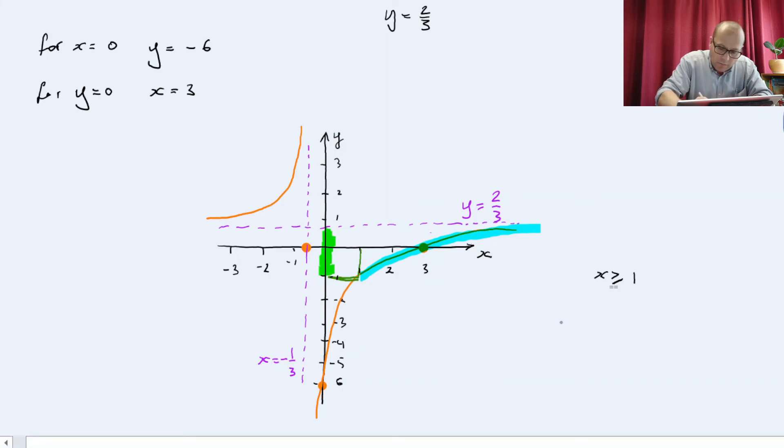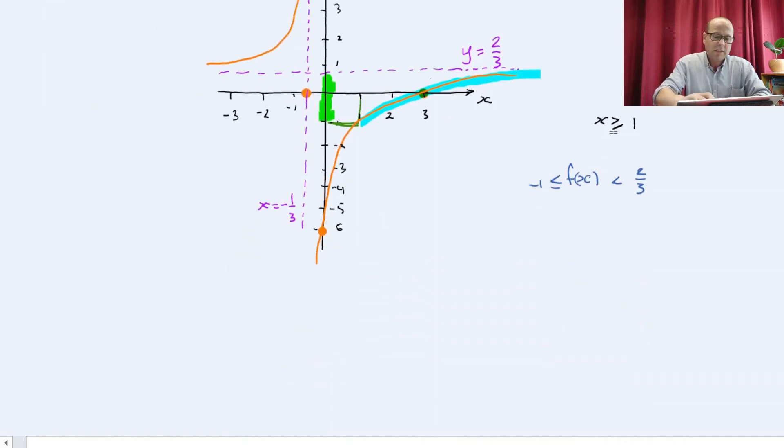So, therefore, f should be greater or equal than minus 1 and smaller than 2 thirds. You will notice that 2 thirds is the asymptote, cannot be equal to. So now let's answer another question.